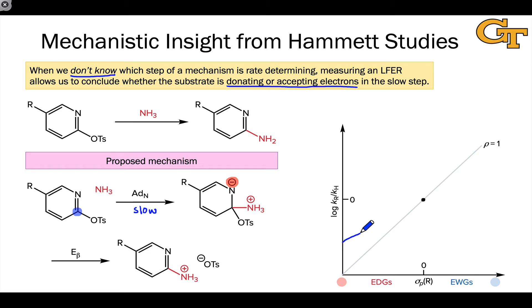In that case, I would observe a positive correlation between the reaction rate and electron withdrawing power, in the same direction as ionization of a para-substituted benzoic acid.